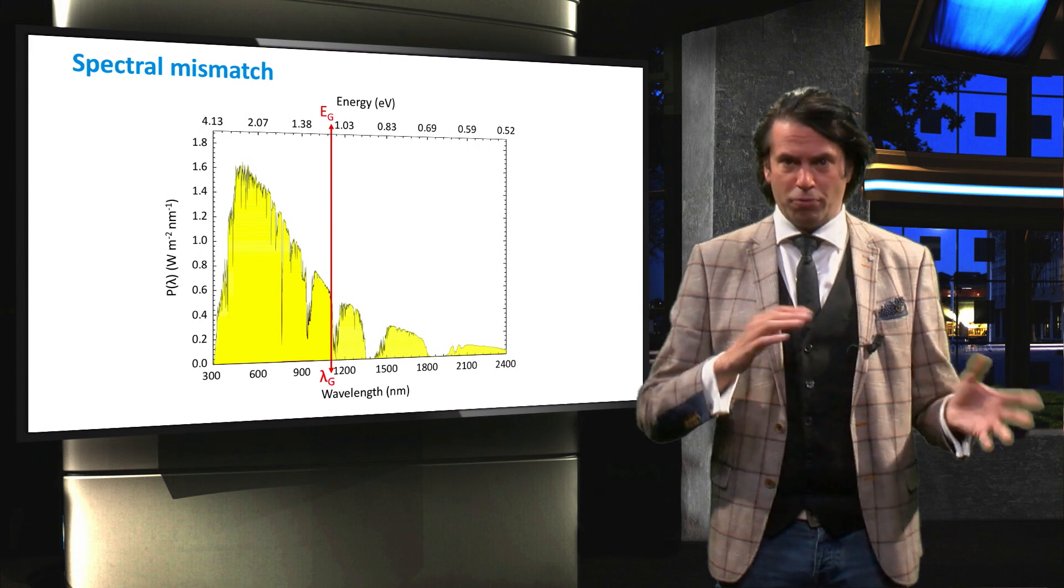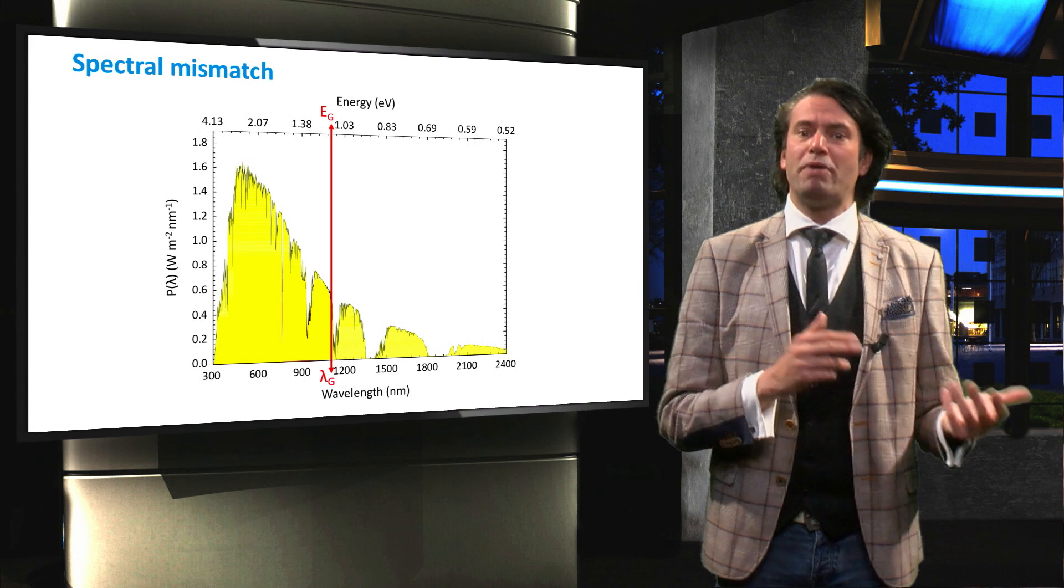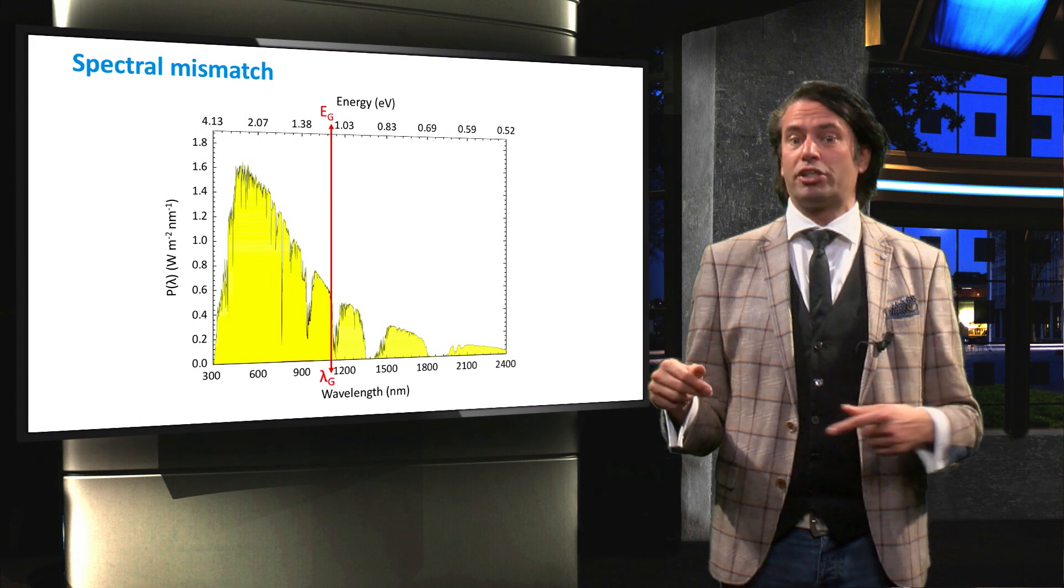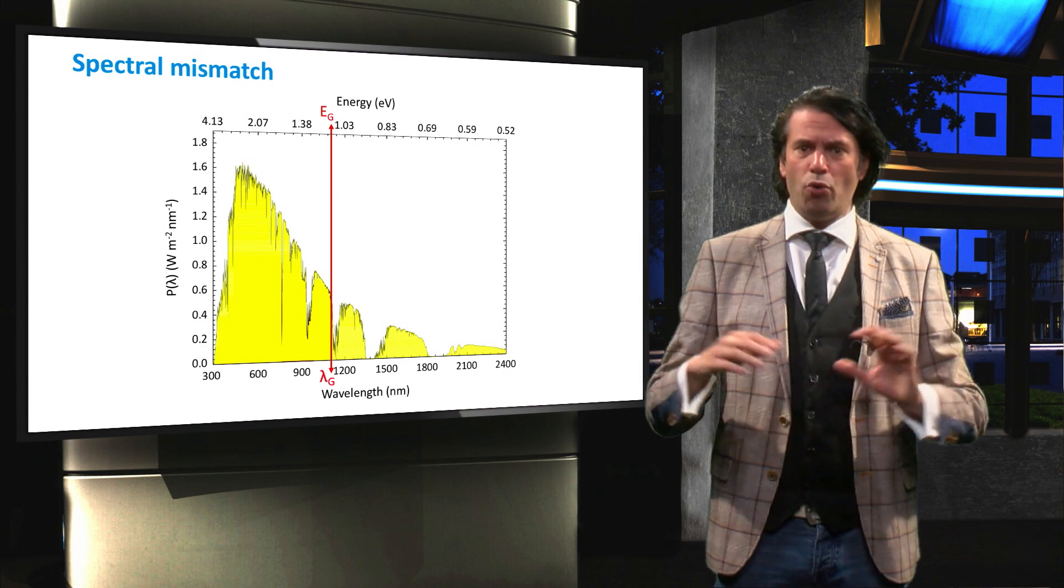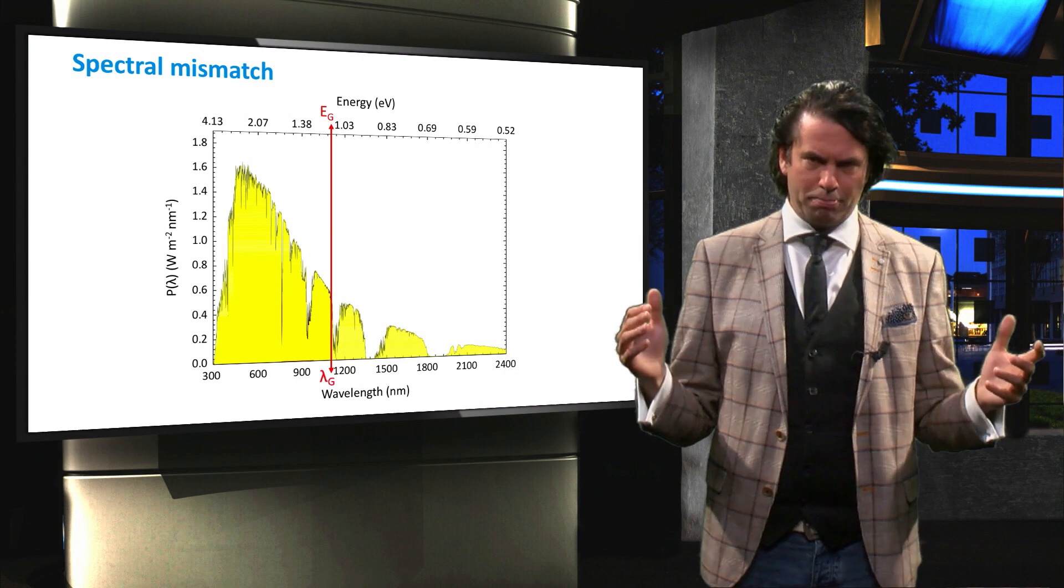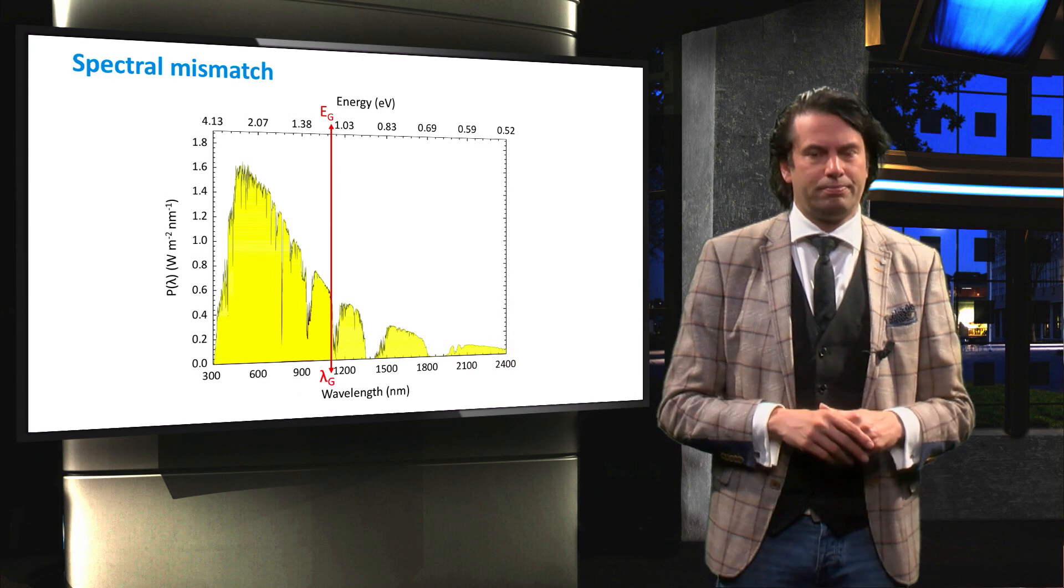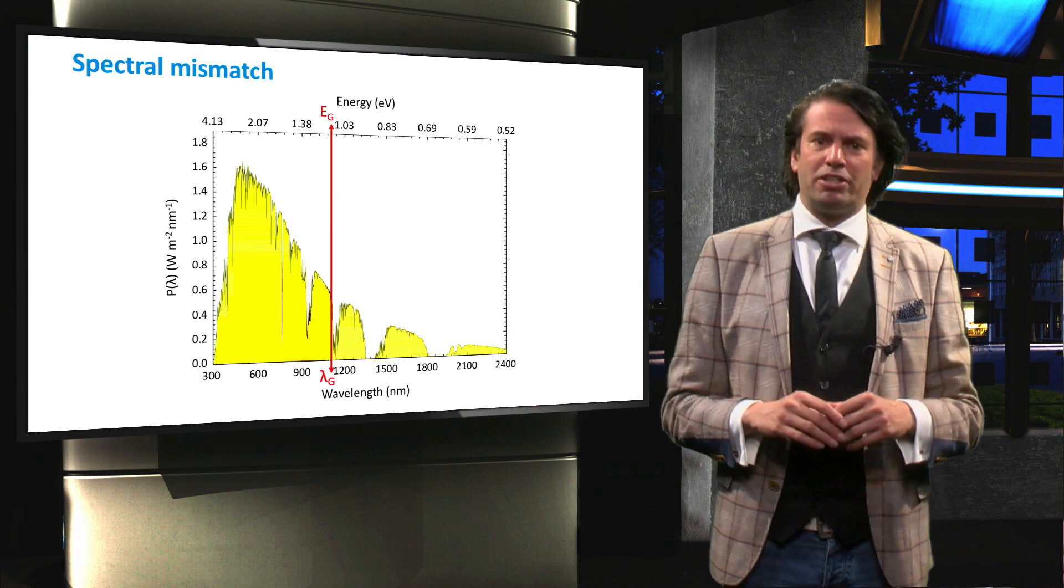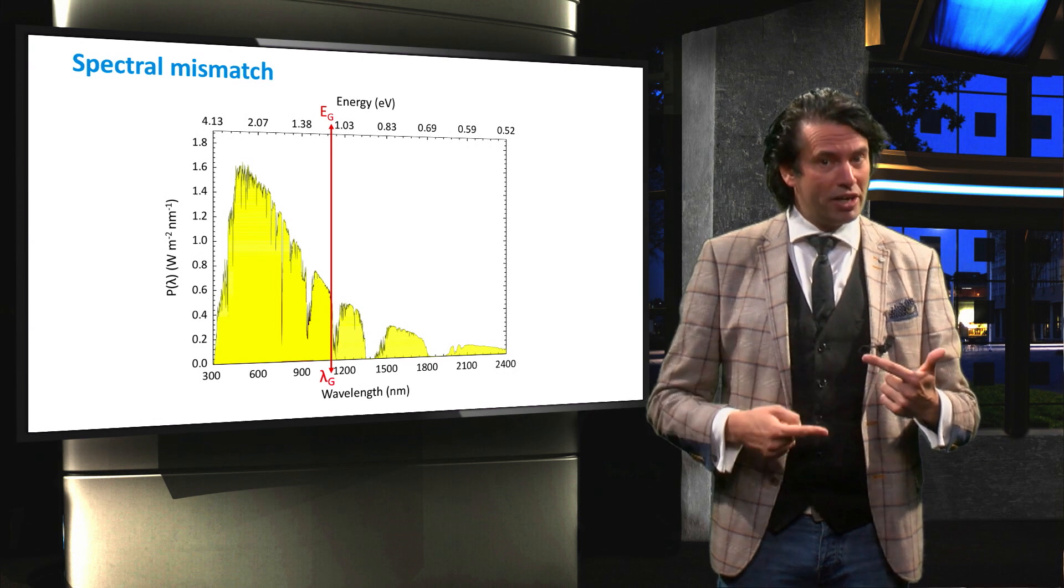Photons with an energy below the bandgap do not have enough energy to excite an electron from the valence to the conduction band. Since there are no allowed energy states in the bandgap, these photons simply pass through the semiconductor material. The semiconductor material is essentially transparent to photons with an energy lower than its bandgap.